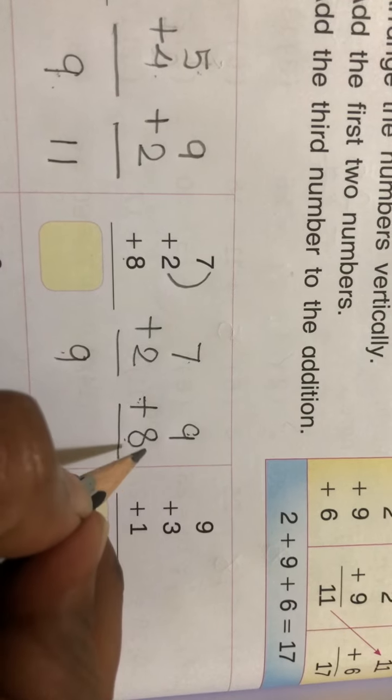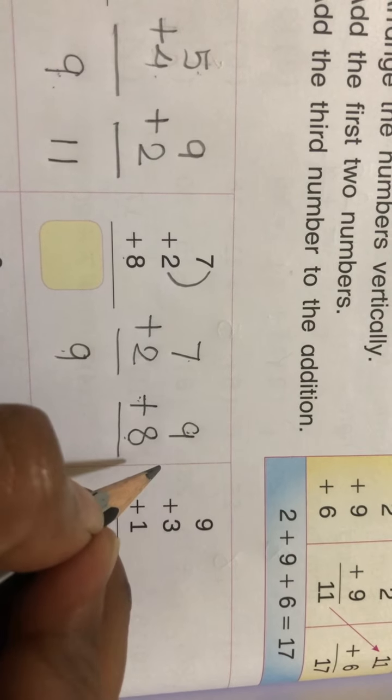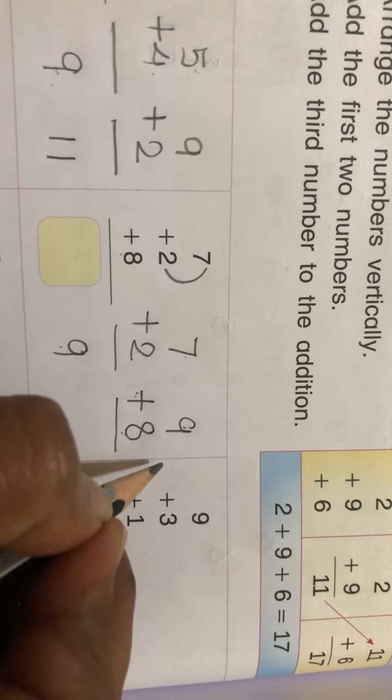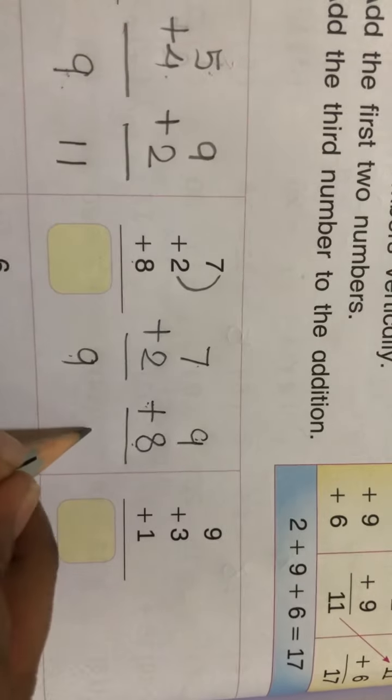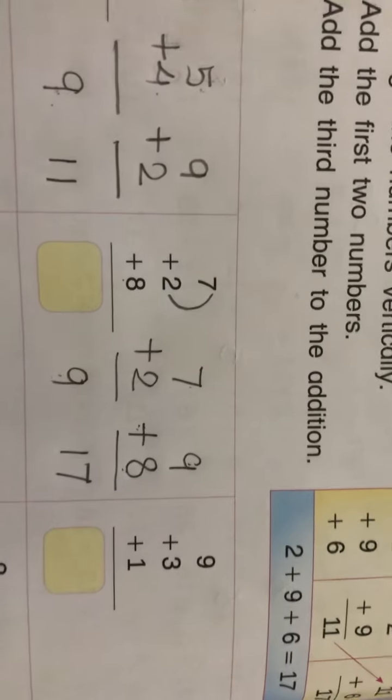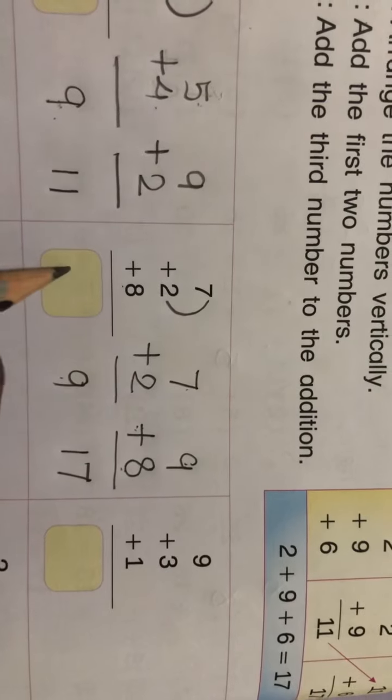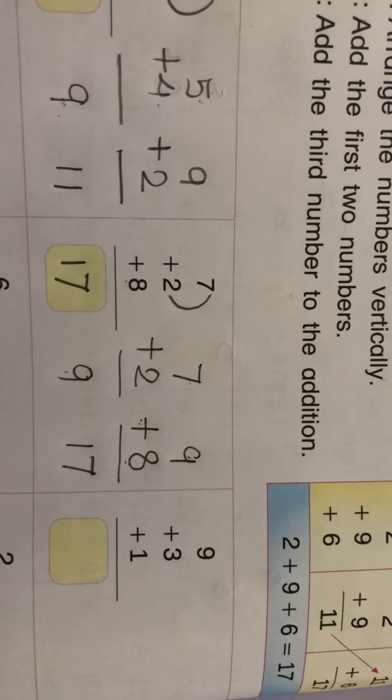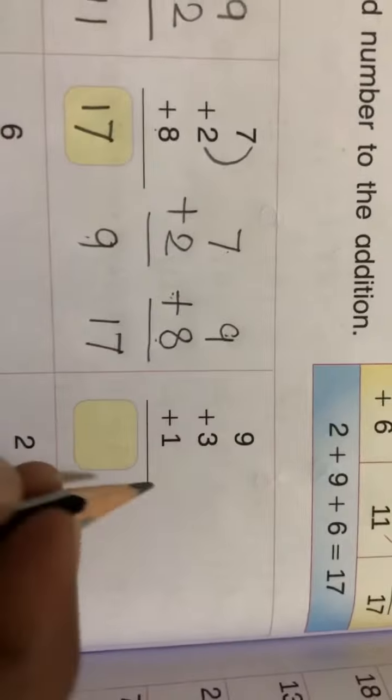So answer will be 17. Now write here answer, you know, go ahead. So answer is 17. Same way, next one.